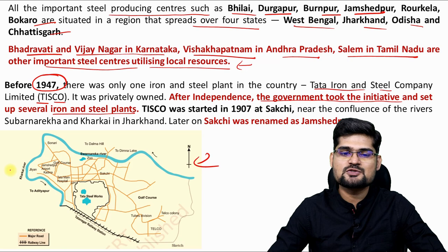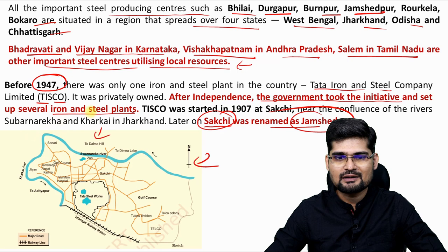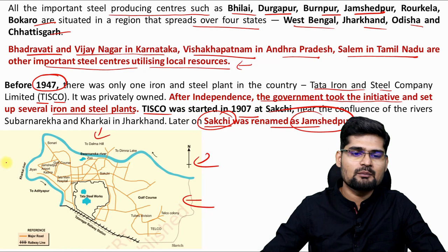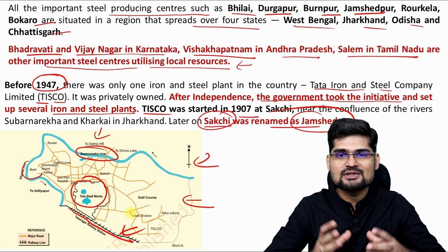The most famous one before 1947 was TISCO — Tata Iron and Steel Company — and after independence the government took the initiative to set up other iron and steel plants. This is the sketch map of TISCO. If you have ever been to Jamshedpur, you'll understand this. Earlier it was called Sakchi, which was later renamed Jamshedpur. In 1907, TISCO was started here. The map shows steel works, the Subarnarekha river, Kharkai river and the area connected with the railway line.